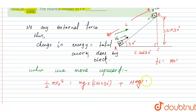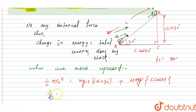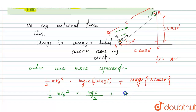So the first equation (upward motion) is: (1/2)·m·v0² = m·g·s·sin(30°) + μ·m·g·s·cos(30°). With sin(30°) = 1/2 and cos(30°) = √3/2, this becomes: (1/2)·m·v0² = m·g·s/2 + μ·m·g·s·(√3/2). This is Equation 1.